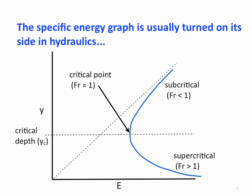For flows at depths less than the critical depth, the flow is supercritical, as the Froude number is greater than 1, and most of the specific energy is bound up in the velocity term rather than in the depth.